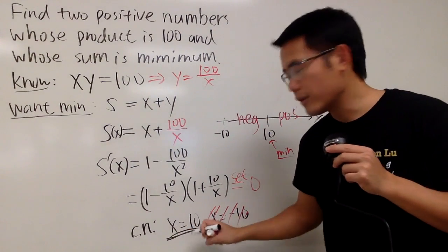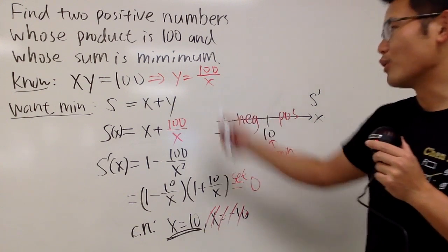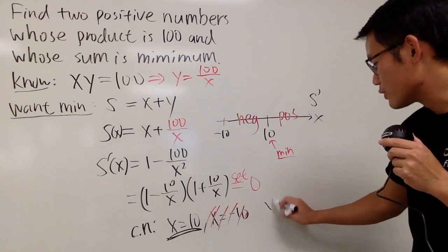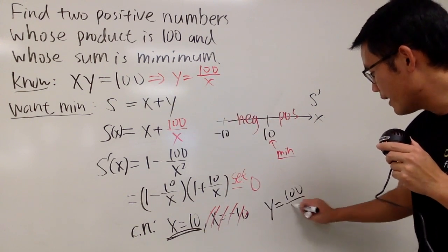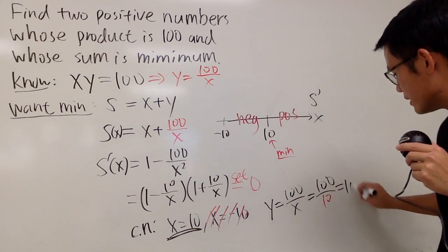So this right here is what we are looking for. x has to be 10. How can we find y though? Just go back here. So of course, y equals 100 over x. And that's 100 over 10, which is of course 10.